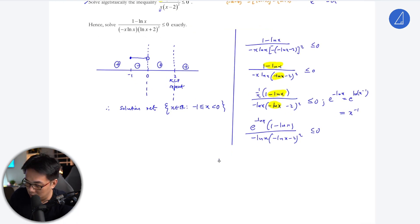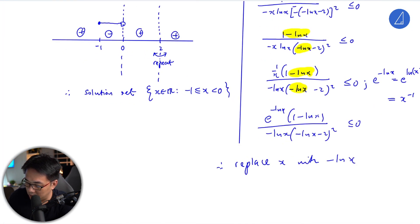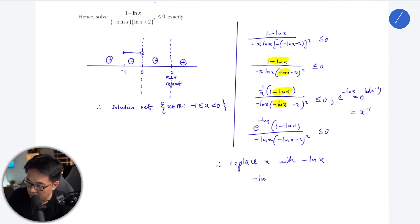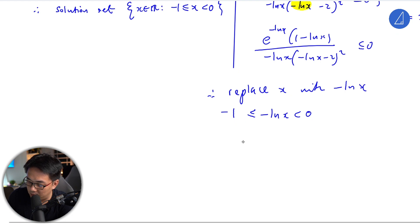Replace x with −ln x. In this case, what we get is −ln x, and the solution would be negative one less than −ln x less than zero. Multiplying by negative one flips the sign, giving us zero less than ln x less than one.